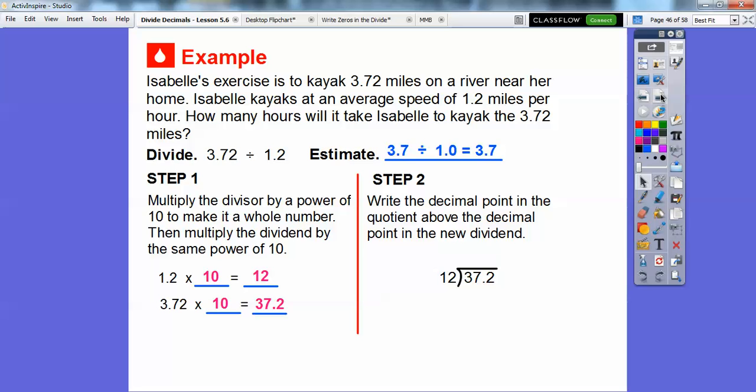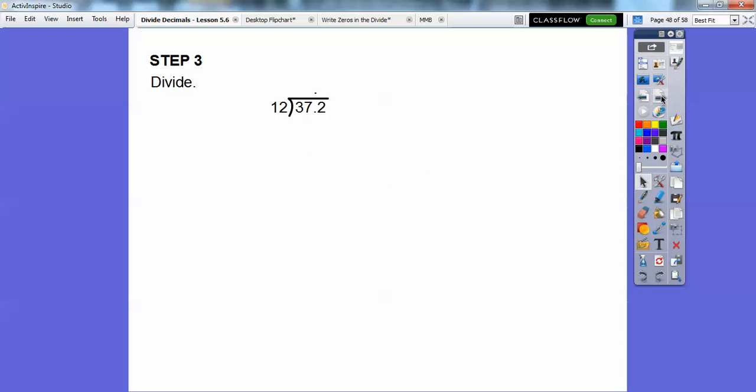So now what we're going to do is divide 12 into 37.2. So let's write the decimal point in the quotient above the decimal point in the dividend. So we're going to slide this decimal point right up there. So there it is. I don't know if you can see it. Can you see that little dot right there? Let's just slide this up and put it on the next page. And we're going to go ahead and divide. So 12 goes into 37 3 times and then we multiply 12 times 3 is 36. And then we subtract 37 minus 36 is 1. And then we slide that 2 down and 12 goes into 12 once and 12 times 1 is 12. And then we subtract and we finally get 0 right there. So our answer is sitting up there at the top. So Isabel will kayak for 3.1 hours right there.